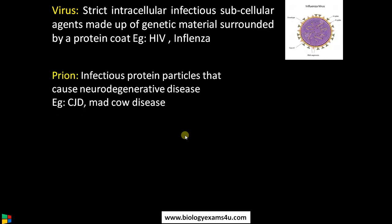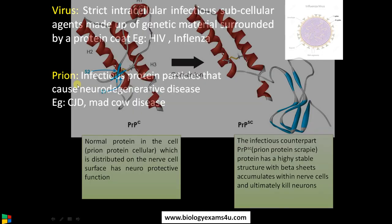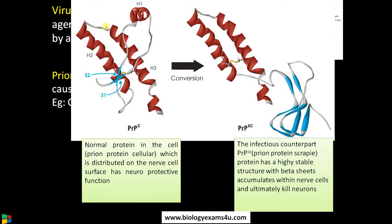The second exception is prion. Prions are infectious protein particles that cause nerve diseases. The normal prion protein is present on nerve cell surfaces and has a neuroprotective function, but at times an infectious counterpart appears that is highly stable, accumulates, and causes death of neurons. These are simply infectious protein particles — not even DNA or a protein coat.